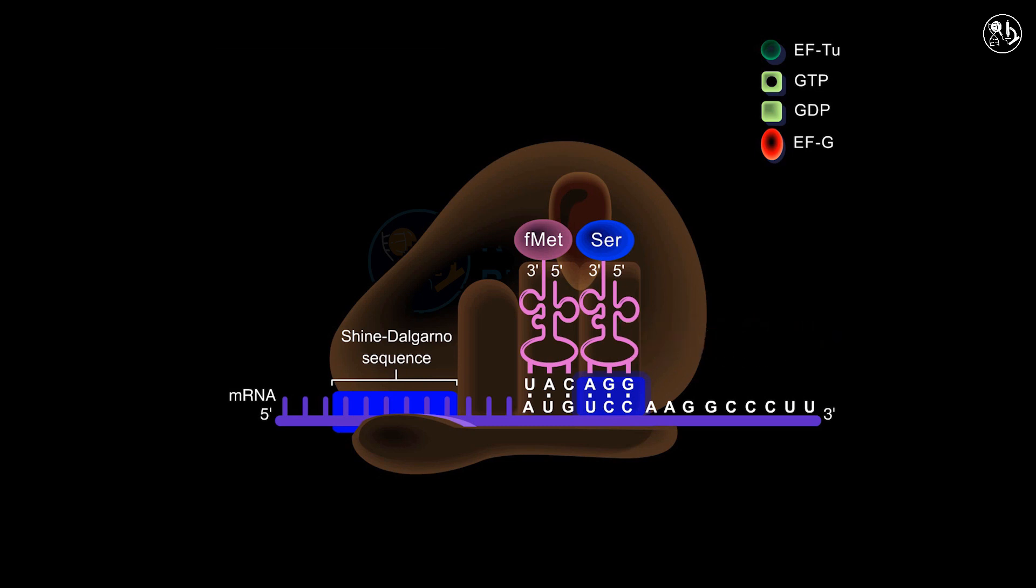With the tRNA molecules present in both the P and A sites, a peptide bond is able to form between the adjacent amino acids.